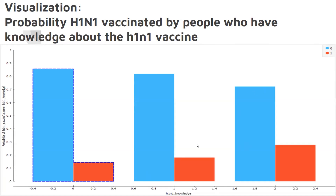The instructor asks a question: what is the target class in the dataset, and what are they trying to predict? The team responds that they are predicting the vaccines people have taken for H1N1 and seasonal flu. A discussion follows about whether this is binary classification, multi-class, or regression. The team clarifies it is multi-label binary classification — predicting two separate binary targets: H1N1 vaccine and seasonal flu vaccine, each on a scale of 0 and 1. The instructor confirms it is binary classification, not regression, and not multi-class.